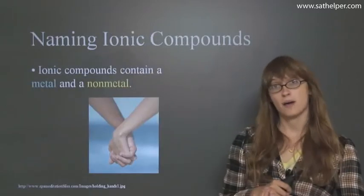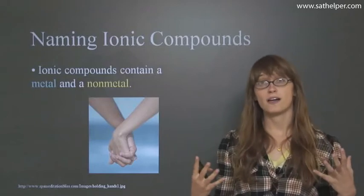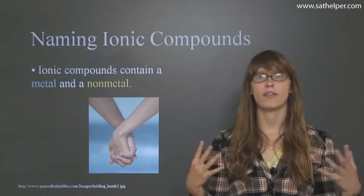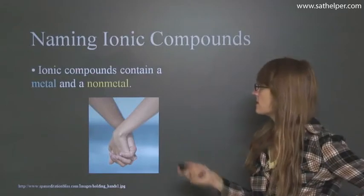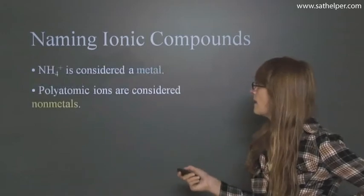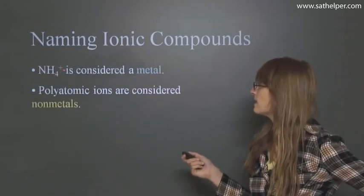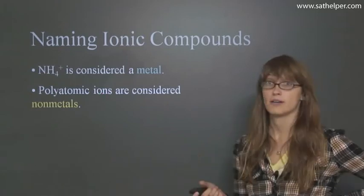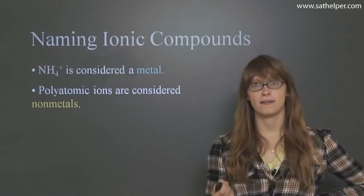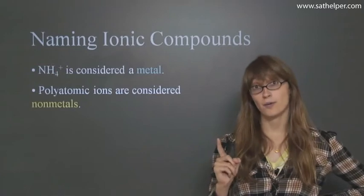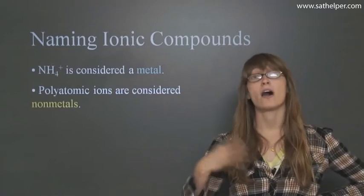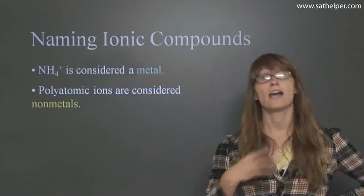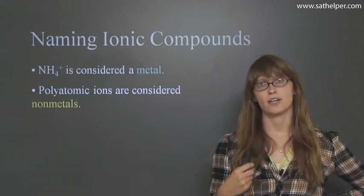So naming ionic compounds. We just talked about all of these ionic formulas. How do we give them names? How do we speak about them? How do we write about them? What do we call them? So ionic compounds contain a metal and a nonmetal. And in our case NH4+ is considered a metal and polyatomic ions are considered nonmetals. So NH4 is the only positive polyatomic ion. If you've memorized all your polyatomic ions, you'll know that all of them are negative except for ammonium which is positive. So ammonium is considered a metal and all of the other polyatomic atoms are considered nonmetals.